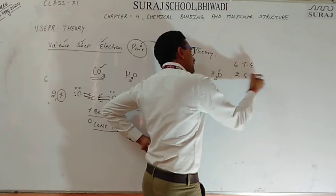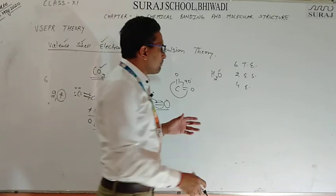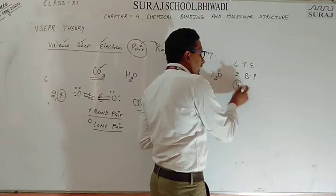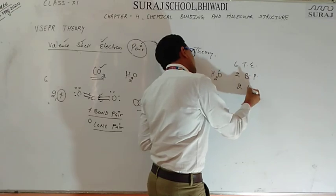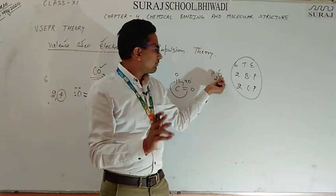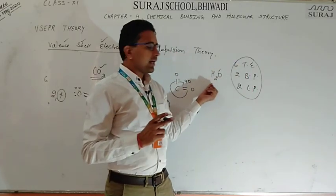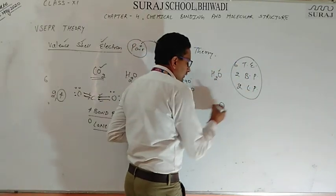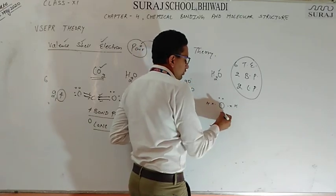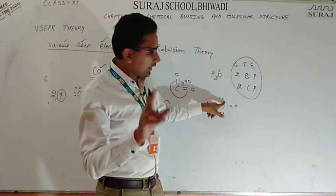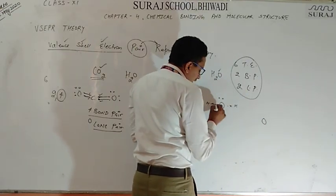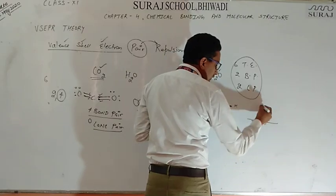In H2O, oxygen has 6 electrons. It shares 4 electrons — 2 with each hydrogen — giving 2 bond pairs. The remaining electrons form 2 lone pairs. So H2O has 2 bond pairs and 2 lone pairs.